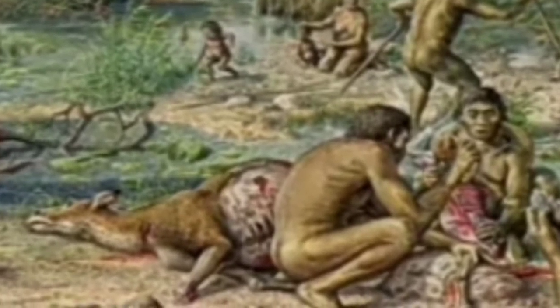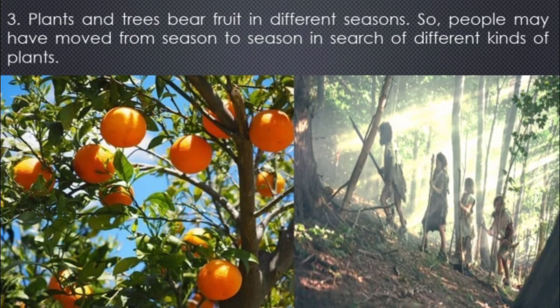Now let's discuss the third reason. Plants and trees bear fruits in different seasons. If they needed to eat mango, they had to go to a different place. If they needed to eat banana or apple, they had to move to a different place. Different varieties of trees bear different kinds of fruits at different places, in different times and seasons. So if they needed to eat these fruits, they had to move from one place to another.